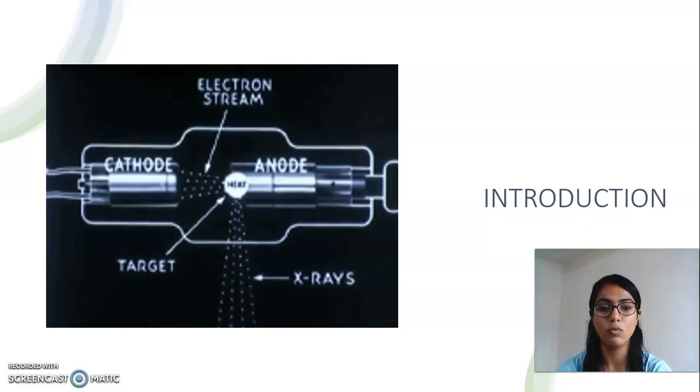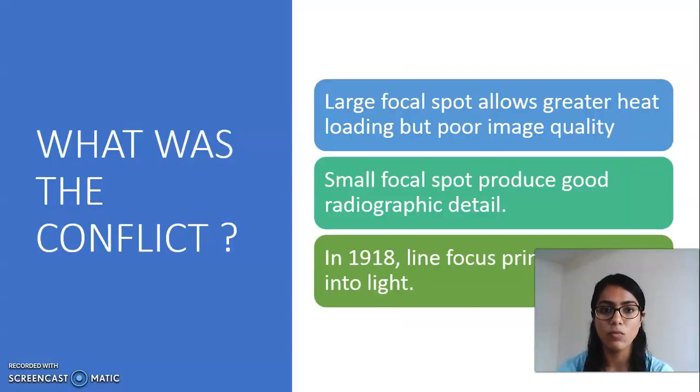Here comes the conflict. What was the conflict? The conflict was larger the focal spot allows greater heat loading but poor image quality. Small focus spot produced good radiographic detail but heat dissipation was not effective, it caused further damage to the target.